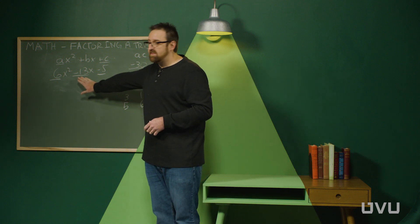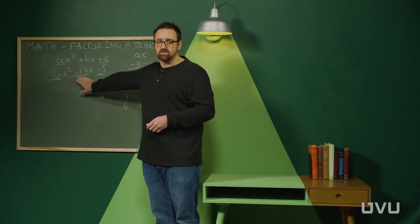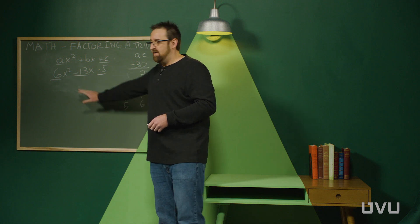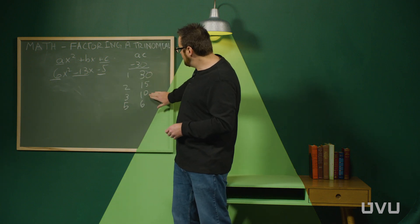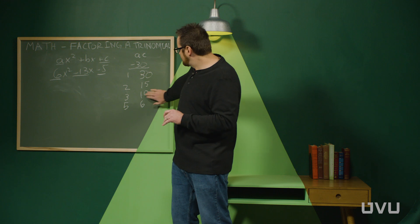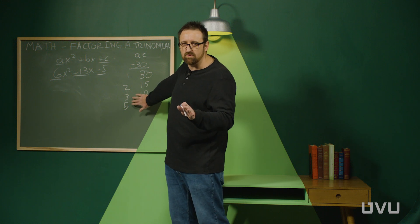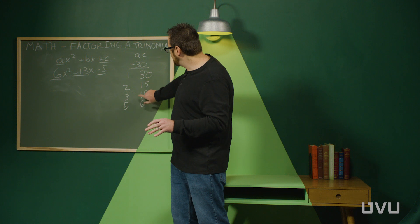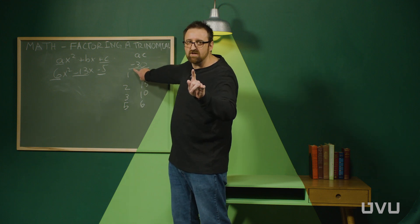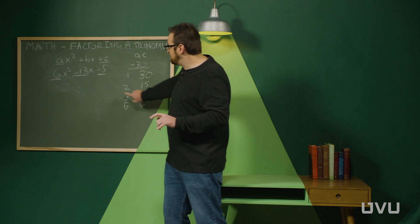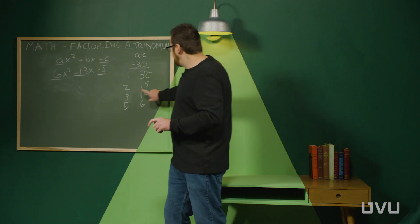So we need to find the pair that adds up to negative 13, this middle number here. And if you take a look down, you might run into trouble because you might think 10 and 3 would do it to give you 13. But remember, only 1 gets to be negative here. And you need both of these guys to be negative to get this one.